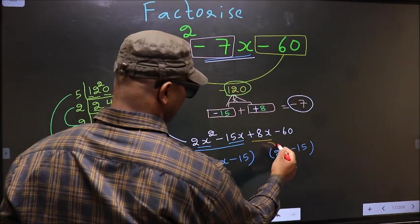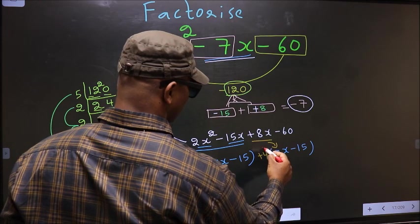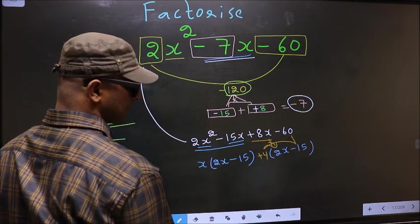Now from this, 2x has gone inside, so outside you get plus 4. Even if you multiply and check, you'll get the same thing.